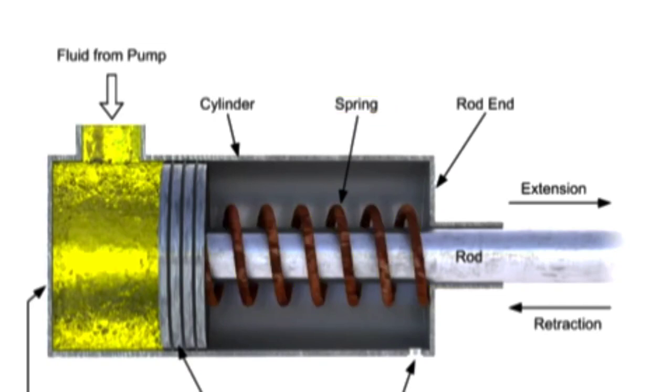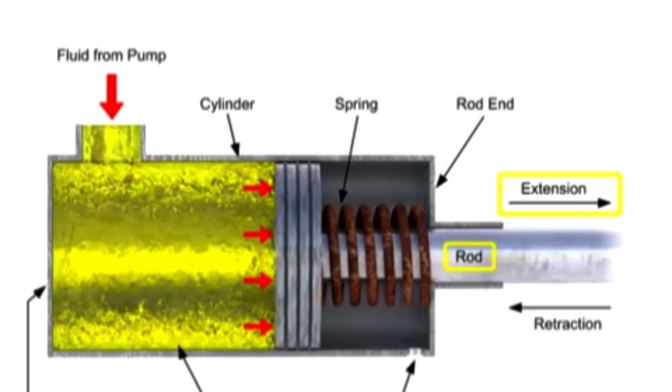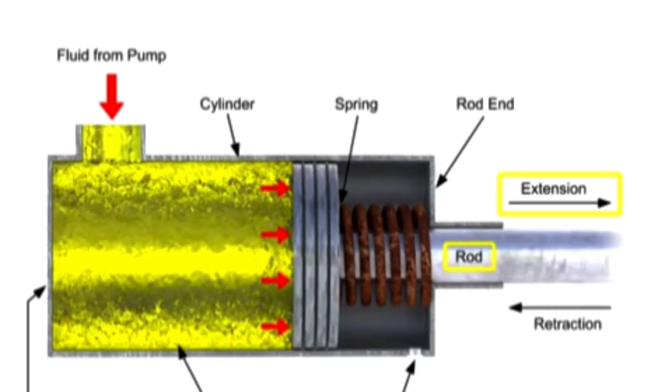A single-acting cylinder produces linear motion in one direction. When a control valve directs fluid through the inlet port into the blind end, pressure builds up and generates a force on the piston. When the pressure build-up is large enough, the piston begins to move, extending the rod. This is called the forward stroke.